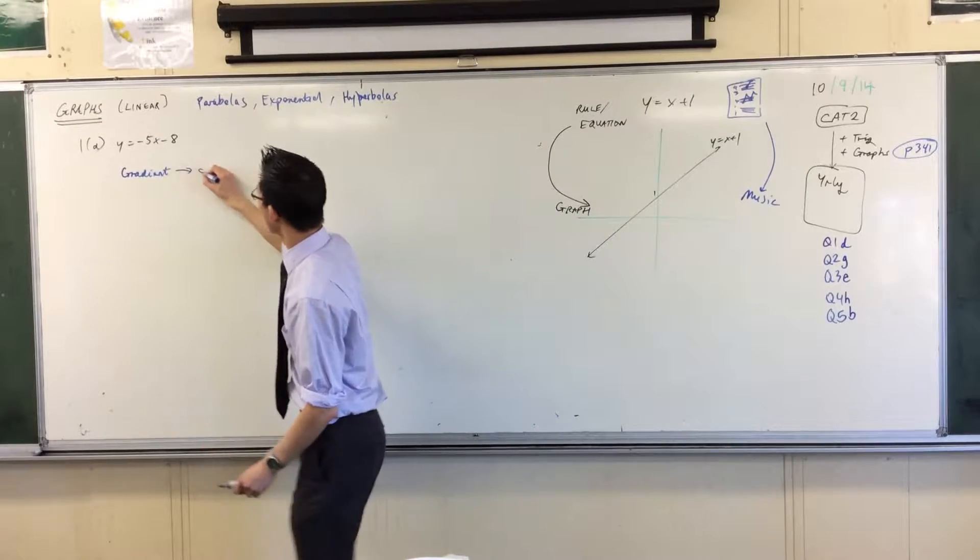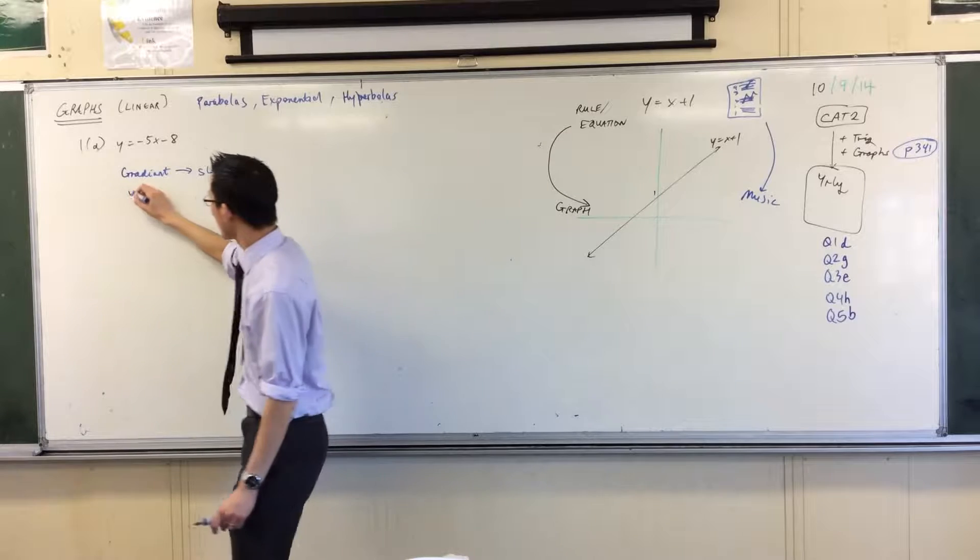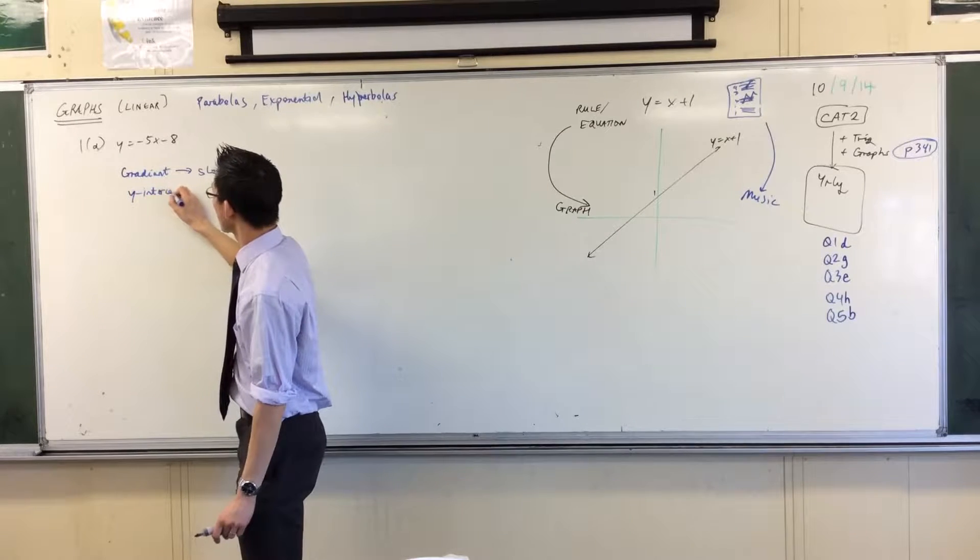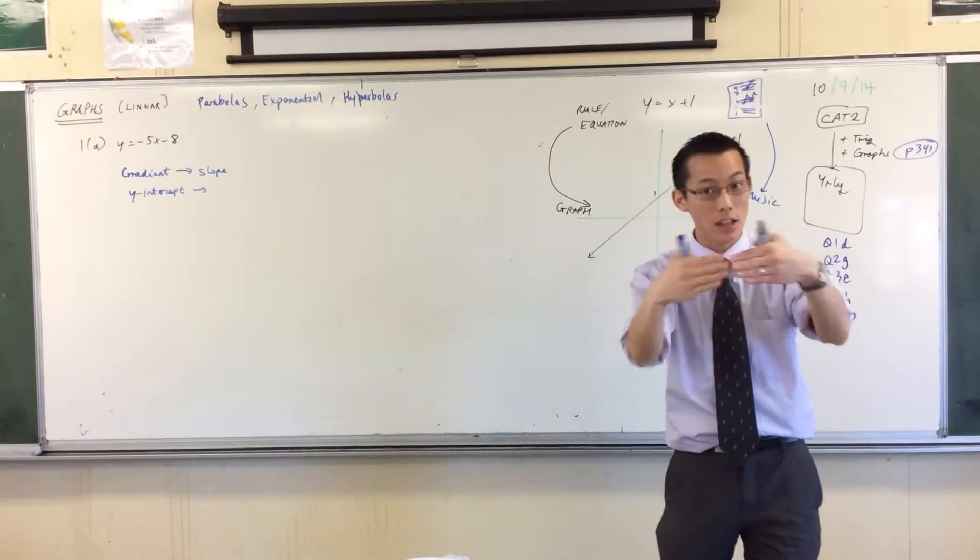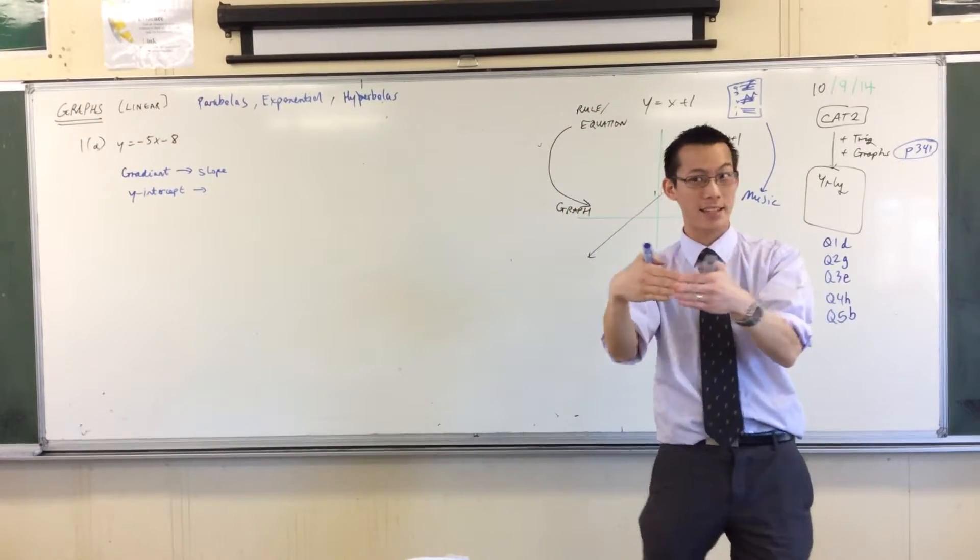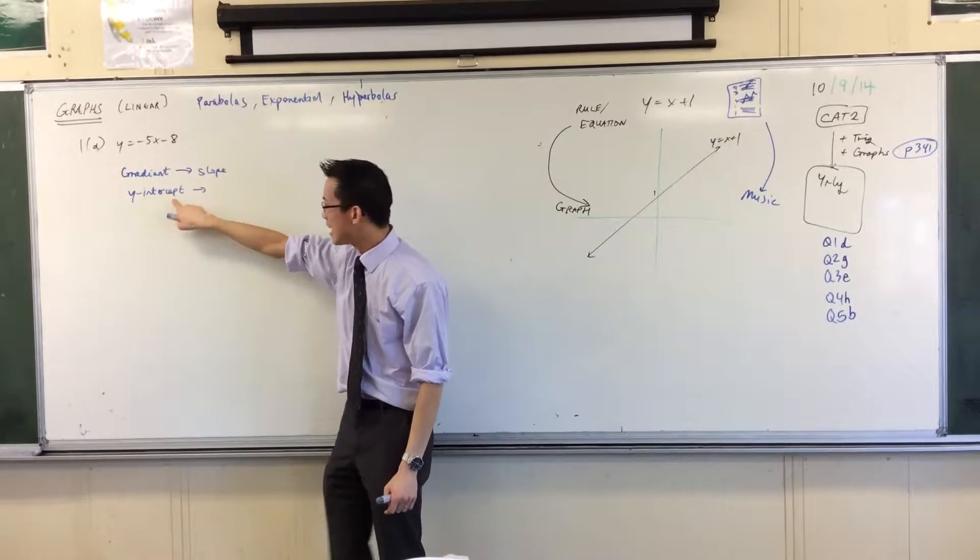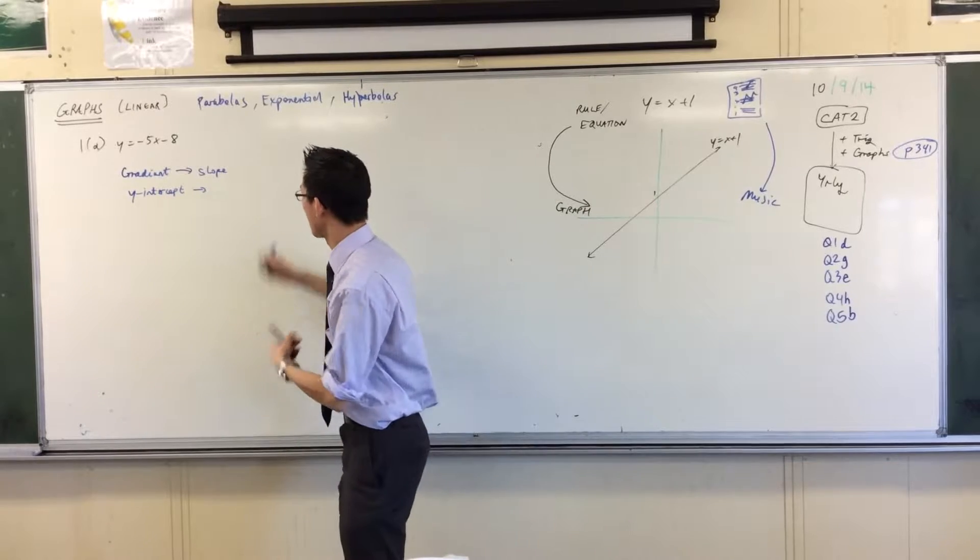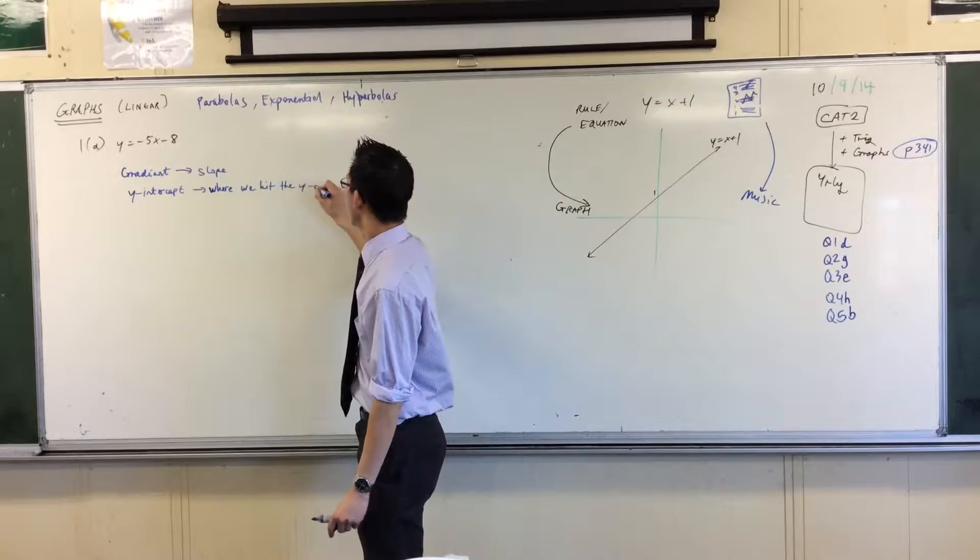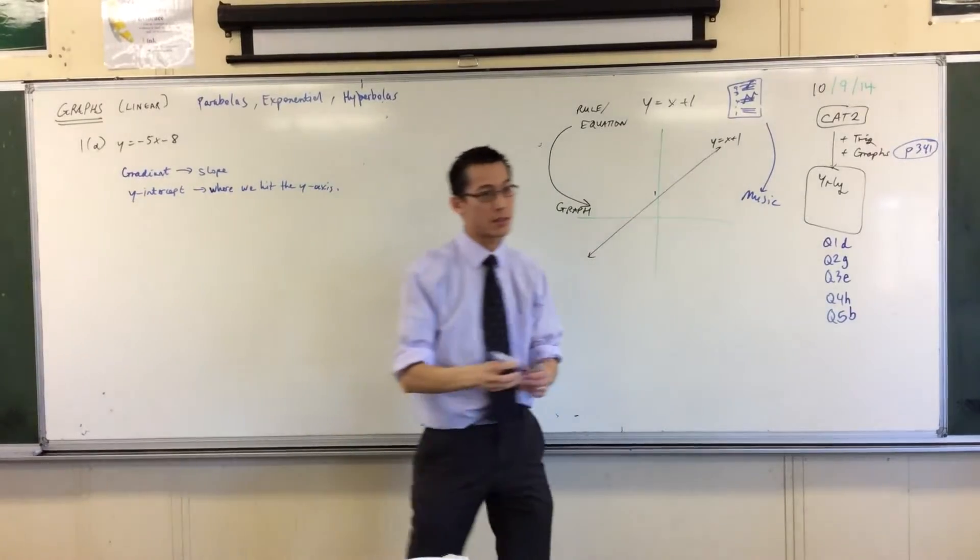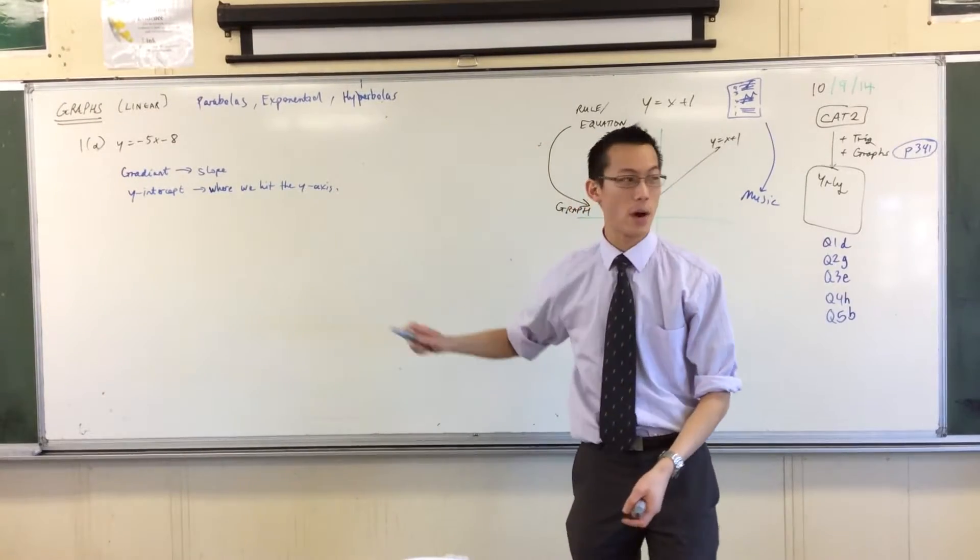So gradient, that's why another word for it is slope. The other thing we're looking for is a y-intercept. What does intercept mean? It's where they collide, they hit each other, they intersect even. It's a very similar word. So it's where our graph hits the y-axis. So that's what they are, but what are the values of the gradient and the y-intercept?